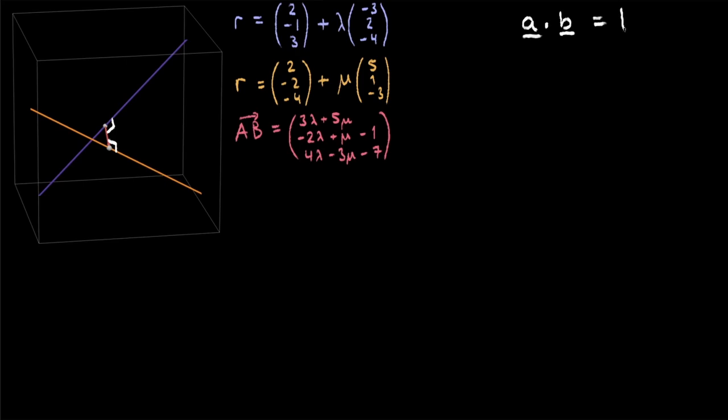So that formula is A dot B is mod A mod B cosine theta. In this case, theta is 90 because the angle created is 90. Cosine 90 is 0, so it's just as simple as A dot B equals 0.